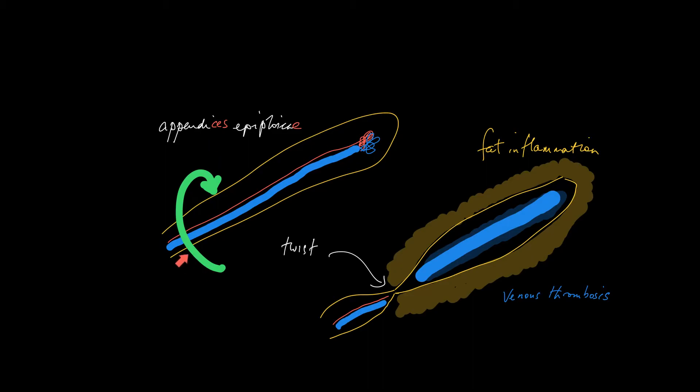If you get a twist of this finger-like projection at its base, this leads to venous thrombosis because the blood in the vein can't get out of this appendix and the fat surrounding the peritoneum becomes very inflamed and the actual appendix itself assumes the shape of a cigar.